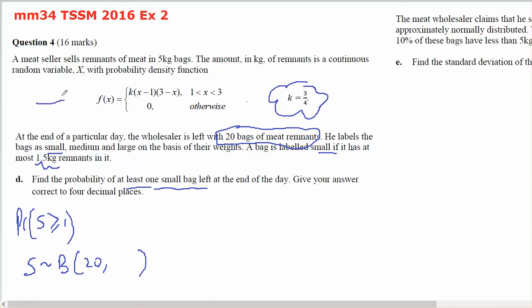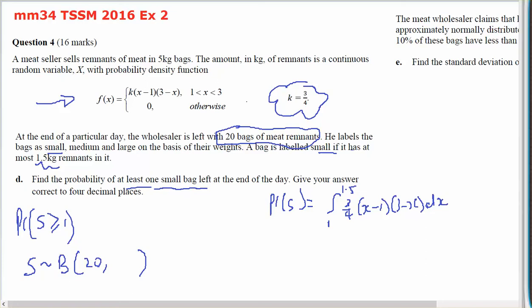So I'm going to use this to work out the probability of it being small. The probability of small will be the integral from 1 to 1.5 of 3 quarters x minus 1, 3 minus x, dx. Because it will be the area between 1 and 1.5. I've got my calculator, I've put this in and I've put K equals 3 quarters, and that gives me 5 on 32.